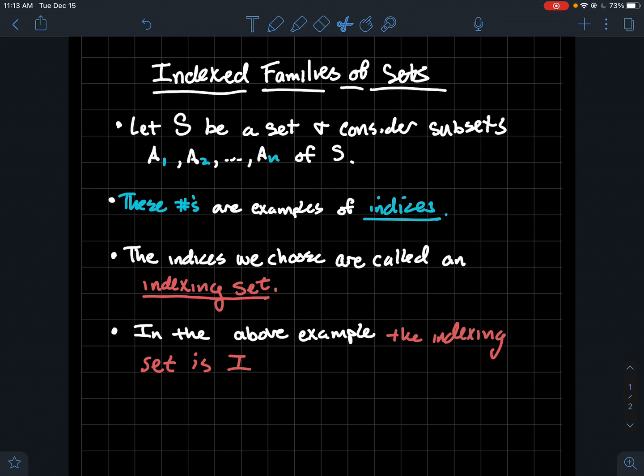To refer back to my example above, A1, A2 through An, the indexing set is I equals the numbers 1 through N, whatever N is. We're just going to use those as our labels for how we're going to refer to these particular sets.